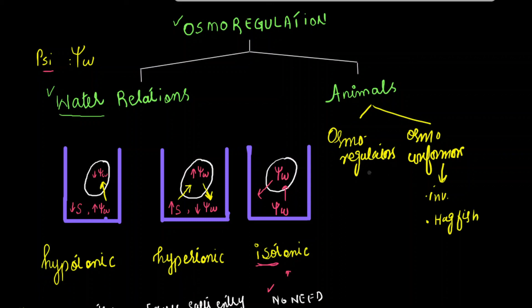In the case of osmoregulation, we can take a human being as an example. The main or principal osmoregulatory organ is the kidney. We know the primary function is osmoregulation.